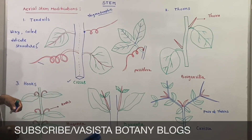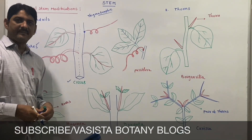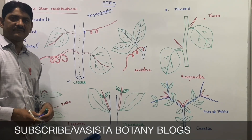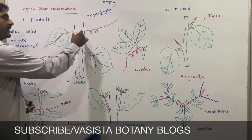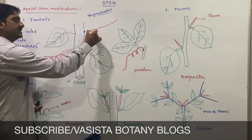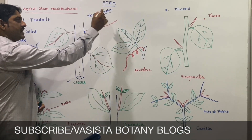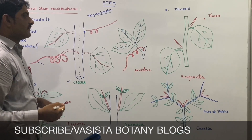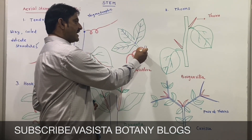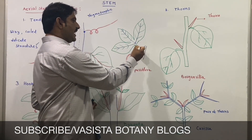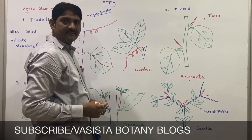In Cissus and Vitis vinifera — grapes — the terminal bud changes into very delicate structures. In Passiflora, the axillary bud changes into a tendril.